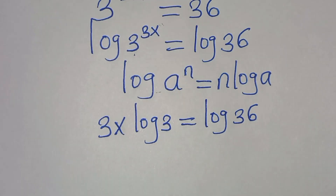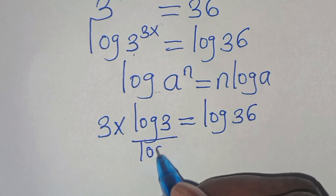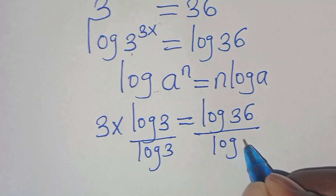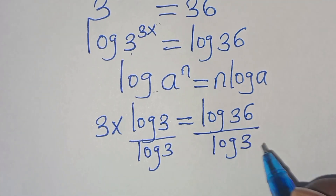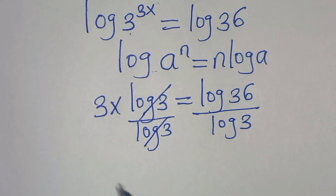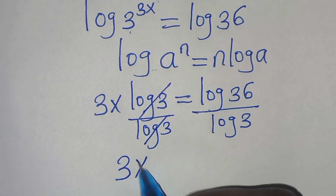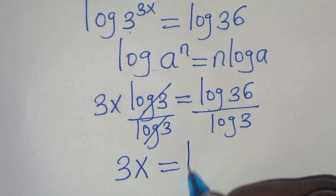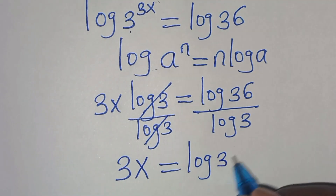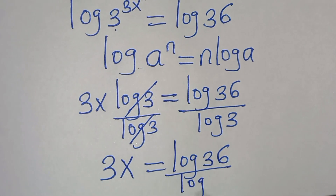The next step is to divide both sides by log 3. We simplify log 3 and log 3, and this means that 3x equals log 36 divided by log 3.